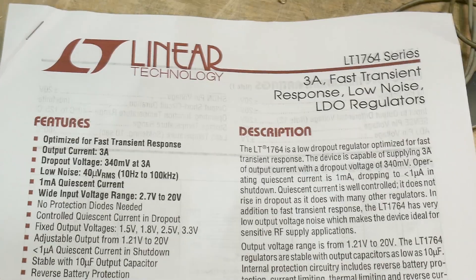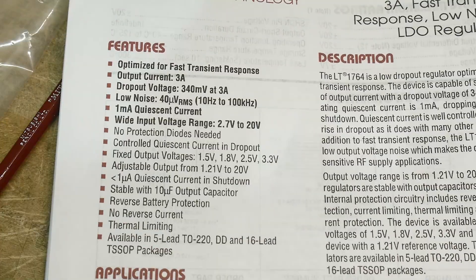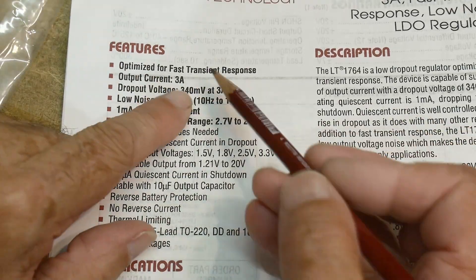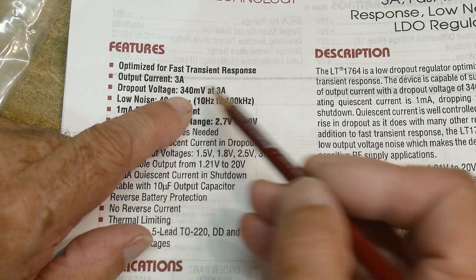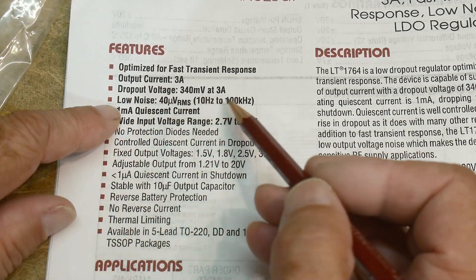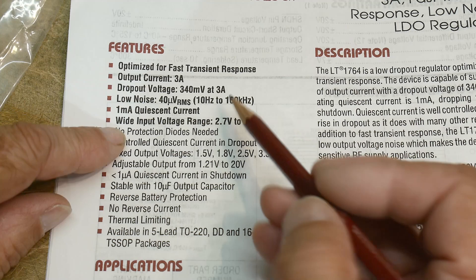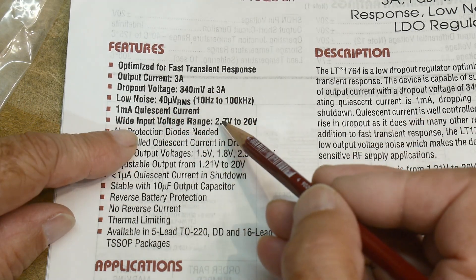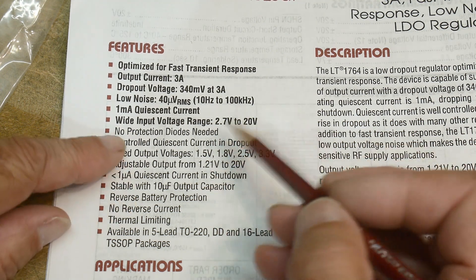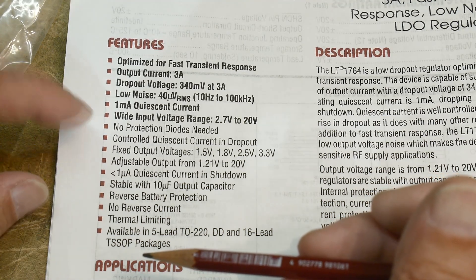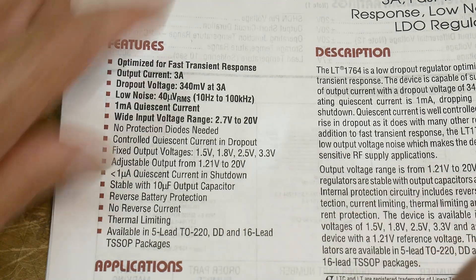3-amp, the dropout is 0.34 volts at 3 amps. That's a really low dropout voltage - that's great. Low noise 10 hertz to 200 kilohertz, 1 milliamp quiescent current. You can use it between 2.7 and 20 volts. No protection diodes needed. So this thing is very nice. We'll look at some of the other things that it can do.